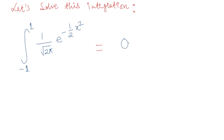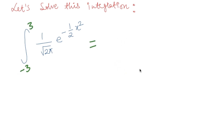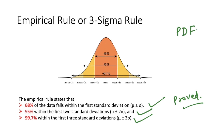The results confirm: from minus 1 to 1 we get 0.68 or 68%; from minus 2 to 2 we get 0.95 or 95%; and from minus 3 to 3 we get 0.997 or 99.7%. This proves 68% of the data lies within one standard deviation, 95% within two standard deviations, and 99.7% within three standard deviations — and this is how these values are derived from the probability density function concept. Thank you, see you in another video.